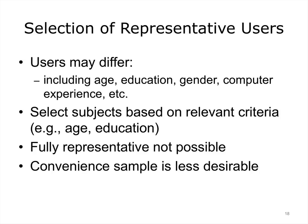The selection of users for usability testing should mirror the overall population of users to the extent possible. For example, if you are testing a glucose meter but don't include older adults in your sample, you are discounting about 40% of the likely user population. Usability testing involves in-depth testing with a small number of subjects. The heuristic is that a test can be perfectly valid with as few as 5 or 6 subjects, who may find upwards of 80% of usability problems. Convenient samples are enticing but are not likely to be representative, potentially leading to skewed results.